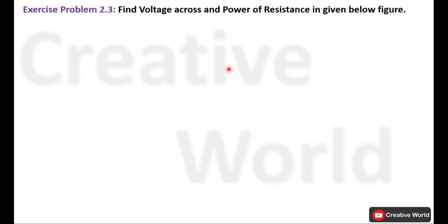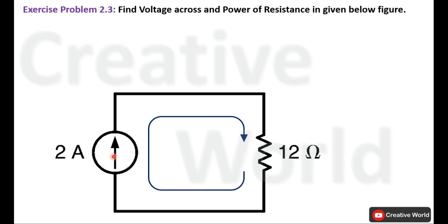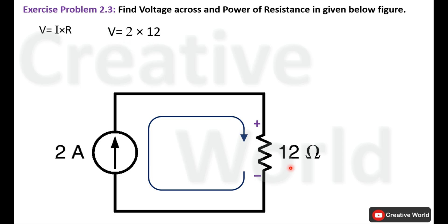Now move towards problem 2.3: find voltage across and power of resistance in the given figure. We have to find voltage across this 12 ohm resistance and calculate its power. Current is already given as 2A. We assign the direction of current clockwise due to the constant current source, and assign the polarity notation across the 12 ohm resistance. Using Ohm's law, V equal to I multiplied by R, with I equal to 2A and R equal to 12 ohm, the voltage across the 12 ohm resistance is 24 volt.